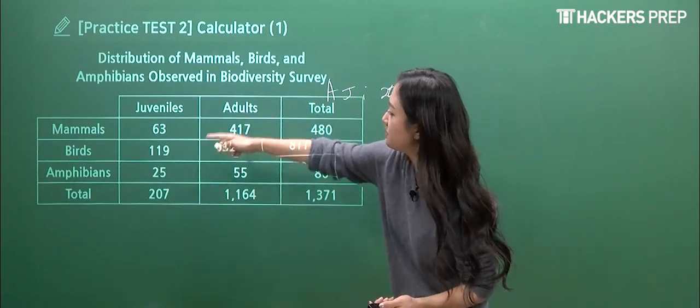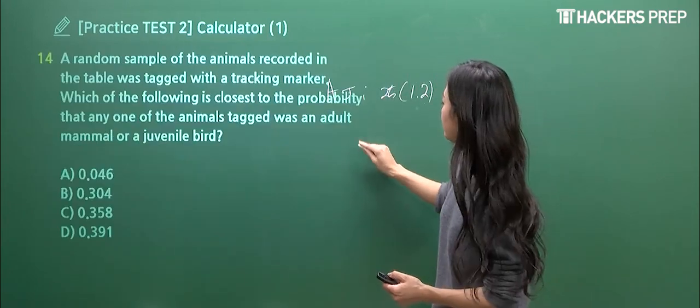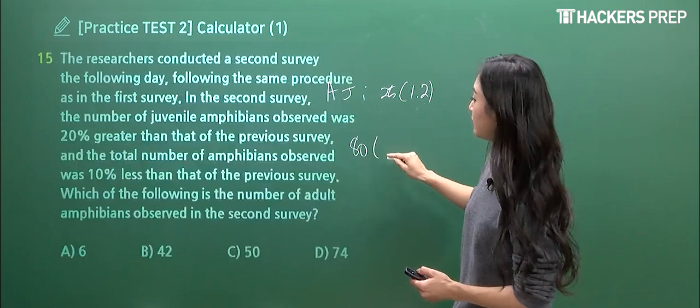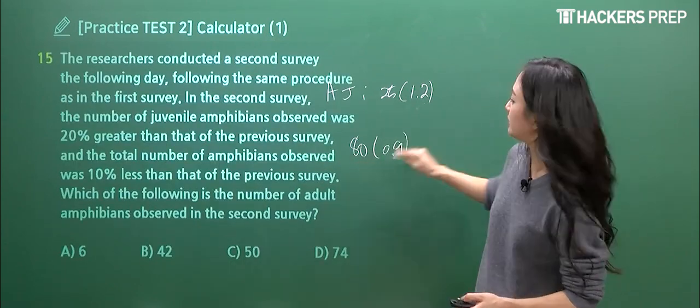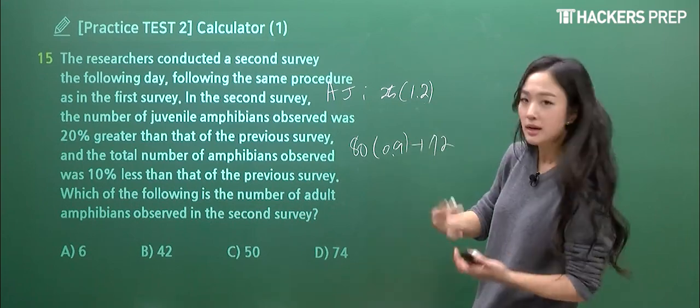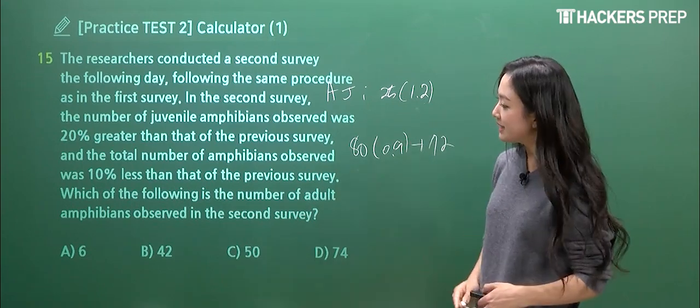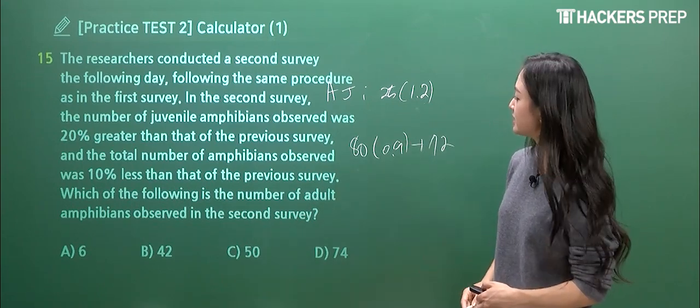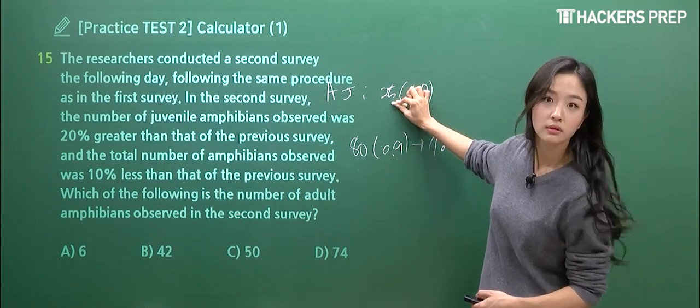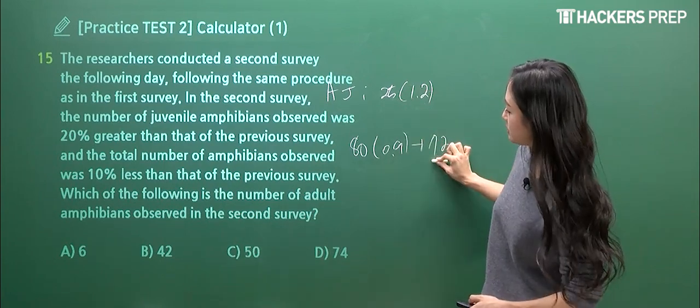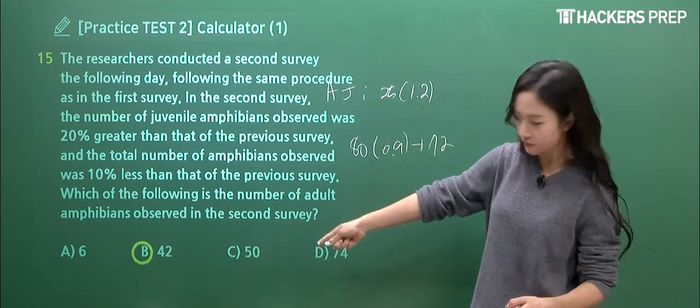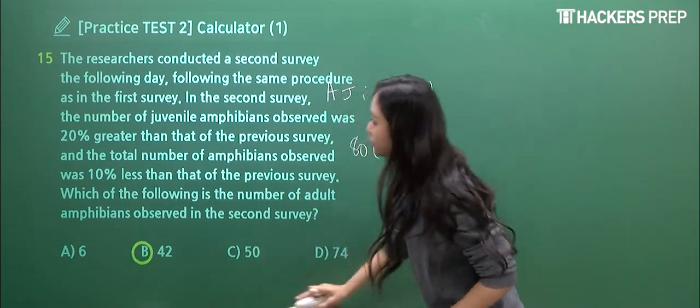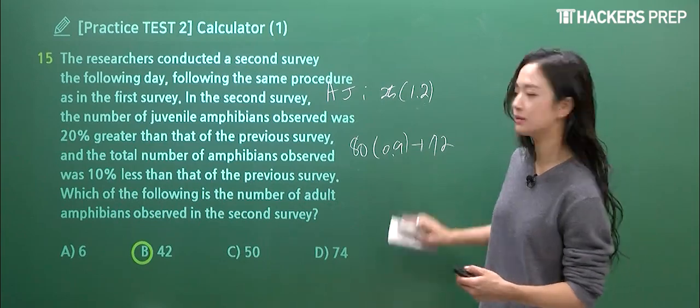So going back to the table real quick, the total number of amphibians refers to a value of 80. And when there was a 10% decrease, we're only applying 90% of it. So total is 72. And as we can expect, how many adult amphibians were observed in the second survey? Juvenile, you add adult, it has to produce the total. So you do 72, minus that, and what do you guys get? Final value of 42, and that's your match. Does that make sense?